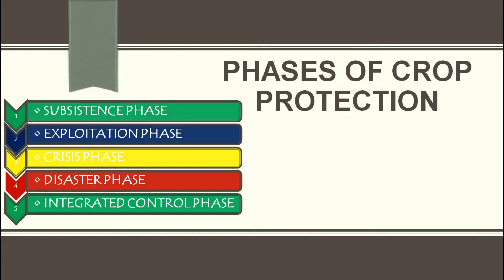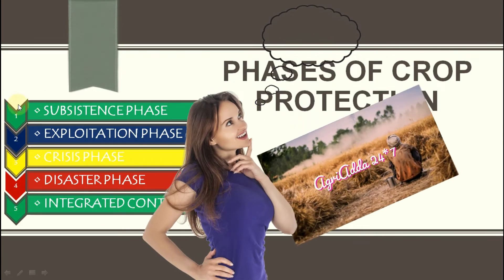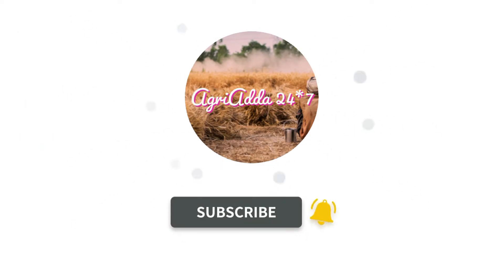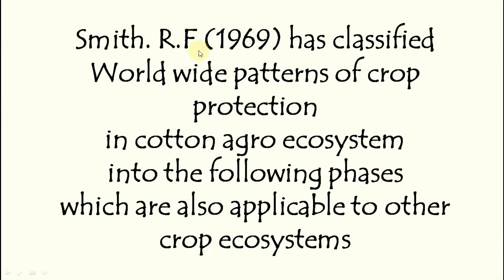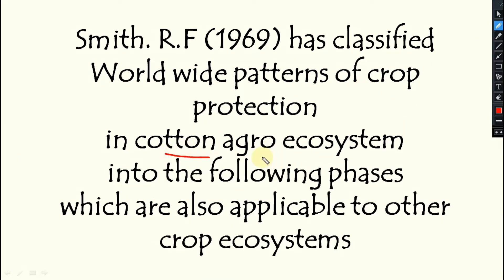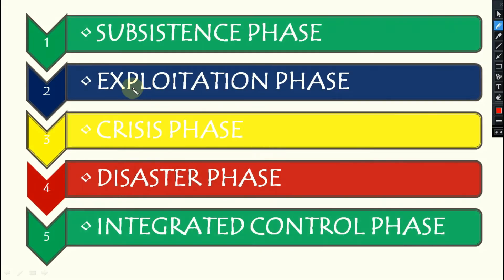Today we are going to discuss the different phases of crop protection. RF Smith, a famous entomologist, classified the worldwide patterns of crop protection in the cotton agro-ecosystem, and this classification can be applicable to other crop ecosystems as well. RF Smith gave these phases of crop protection in 1969. There are five different phases we will discuss one by one.